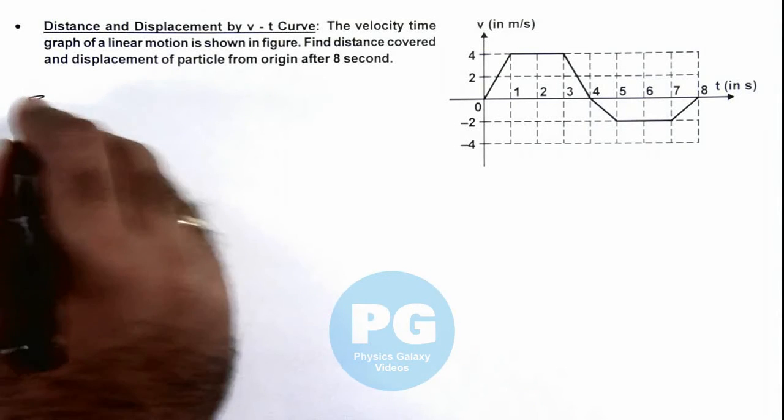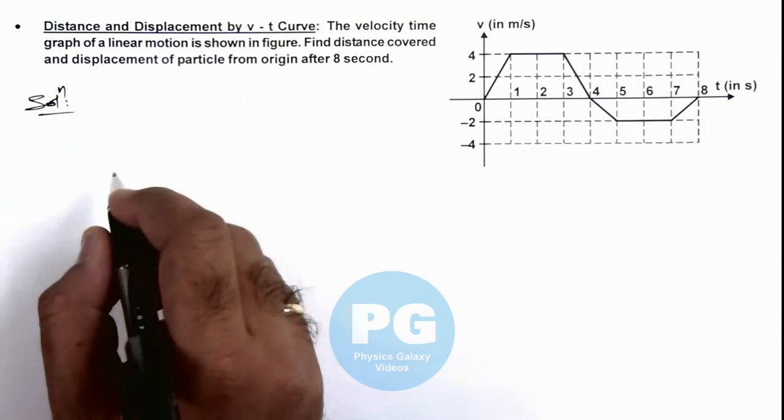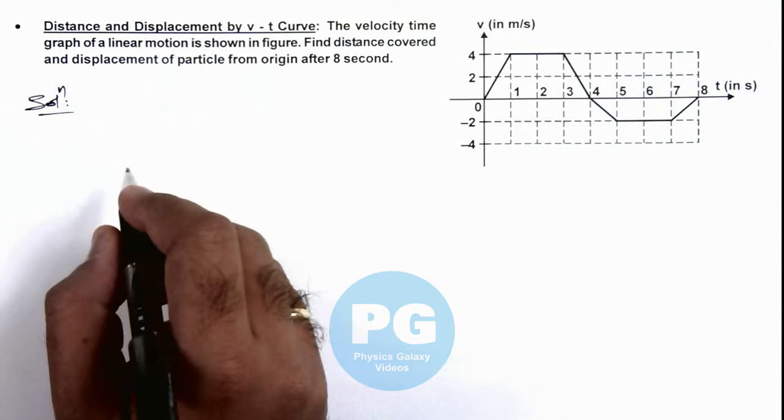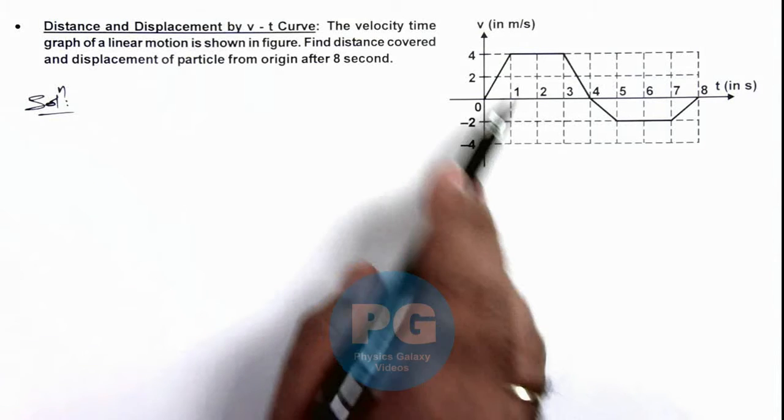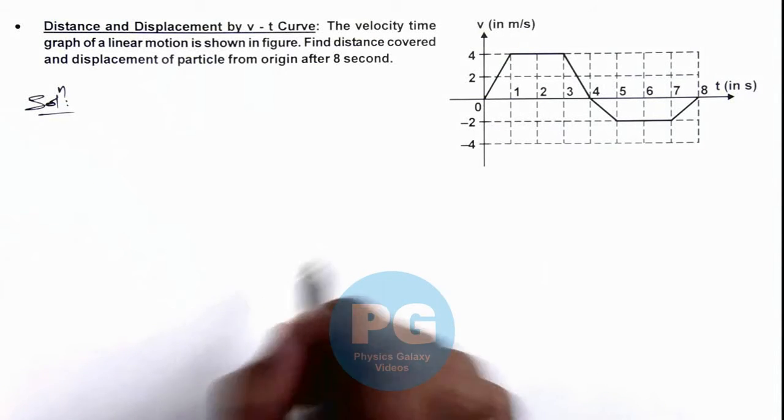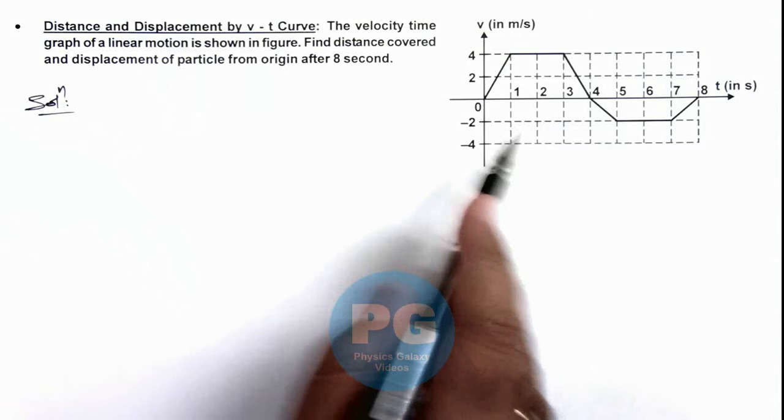Here we can directly analyze that distance and displacement can be calculated by using the area bounded by the v-t curve and time axis.